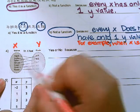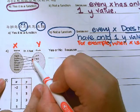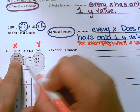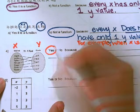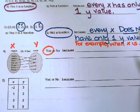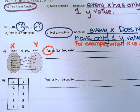An example that would not be a function is if retakes were allowed, then a student could have more than one grade for their test. In this case, yes, it is a function because every student has only one chapter five test grade.